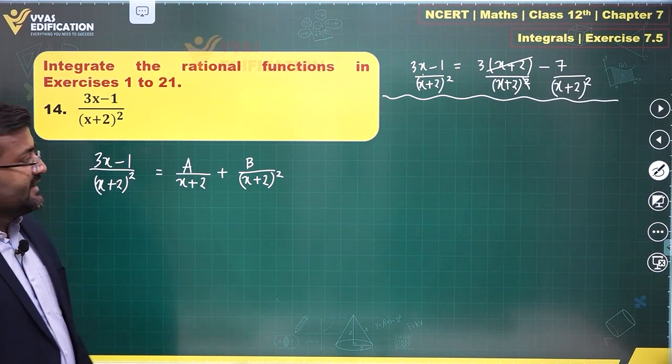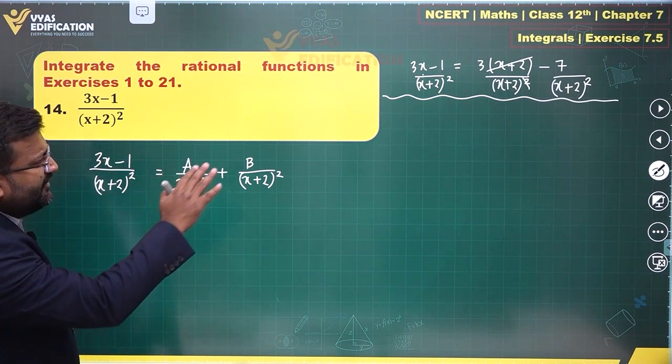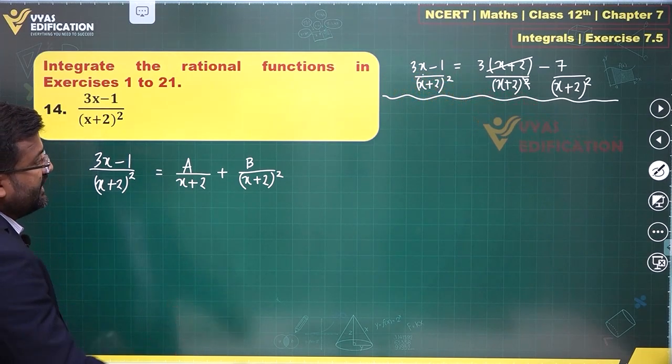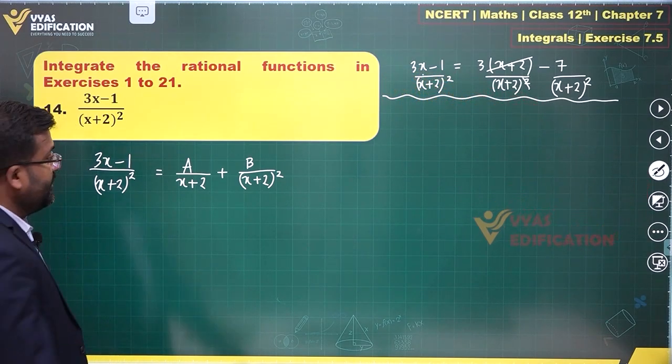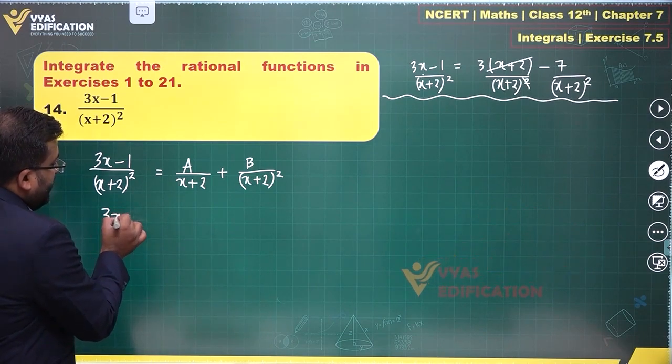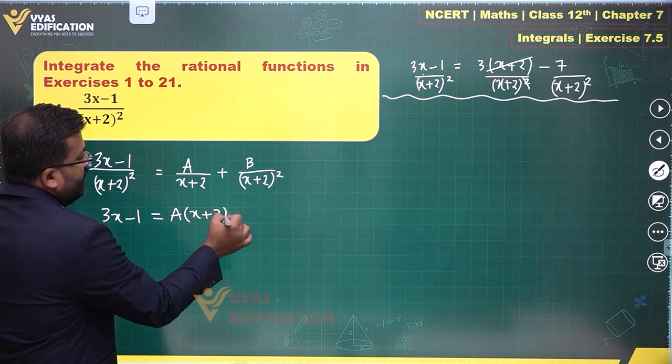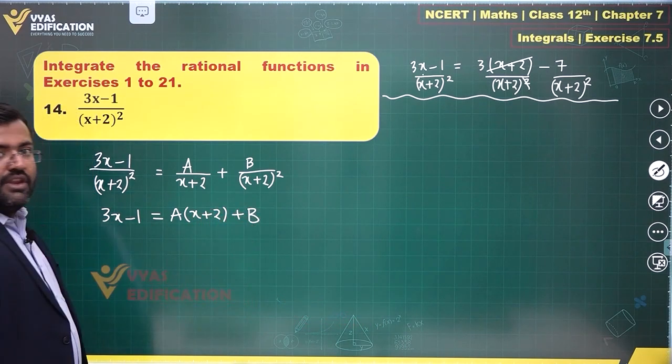In general competitive exams they allow us to use that kind of thing, but here we'll have to use the general method. And what is that? Let's write the numerator and compare the numerators: A times x plus 2 plus B is what I get.